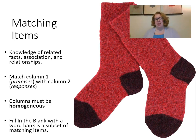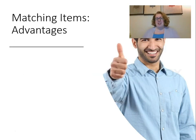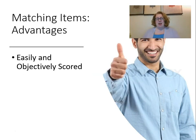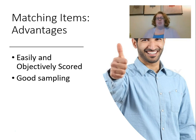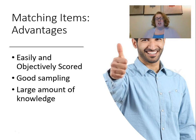Fill-in-the-blank with a word bank is a subset of matching items. Instead of having two columns, you could have a set of fill-in-the-blank items with a word bank at the top — that's essentially the same thing as a matching item. Some advantages of matching items: they're easily and objectively scored, just like our other selected response items. You can get a good sampling of items in a short amount of time and survey a large amount of content.